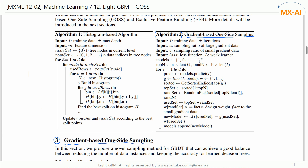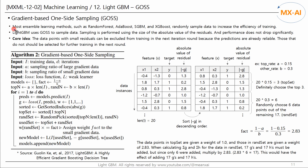In this video, we are going to analyze this algorithm. Most ensemble learning methods such as Random Forest, AdaBoost, SGBM, and XGBoost randomly sample data to increase training efficiency. LightGBM uses GOSS to sample data. Sampling is performed considering the size of the absolute value of the residuals, which are the first-order gradients.